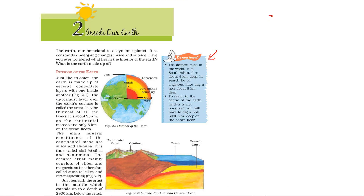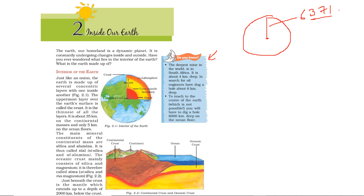So if this is our earth, then the radius of earth is 6371 km — this is the approximate value. And for calculation purpose, we take it as 6400 km.